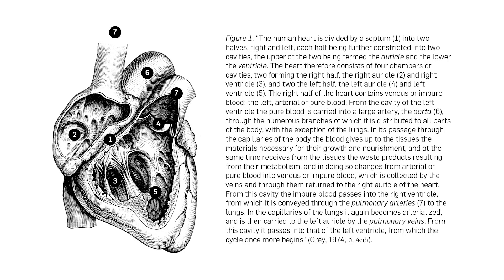The way these images are designed is that they are anatomically correct and they label different parts one, two, three, four, five, six. Then in the text below they'll often describe the process of blood flow through the heart with those numbers — number one is this part, number two is this part, and so on.